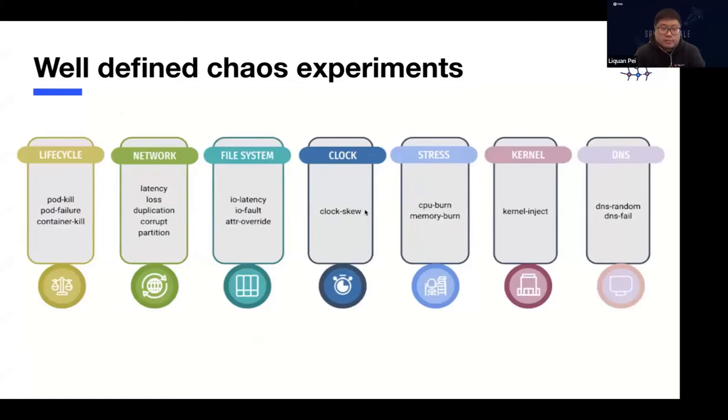Here's a list of built-in experiments that we have developed in ChaosMesh. This includes injecting failures through pod, for example, killing a pod. You can also simulate network latencies, network partitions, and network packet loss. You can also introduce stresses to the system, such as CPU or memory drain, and also introduce kernel failures. So this set of chaos experiments is a good starting point for you to run extensive chaos experiments to ensure your system is behaving correctly.